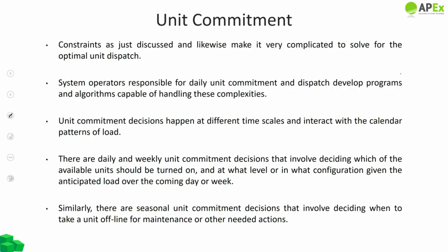When system load increases from 275 to 280 MW, the dispatch from unit A declines from 275 to 220 MW due to the minimum stable level constraint on unit B. These kinds of constraints make it very complicated to solve the optimal unit dispatch and to speak clearly about system marginal costs. System operators responsible for daily unit commitment and dispatch develop programs and algorithms capable of handling these complexities, and generators responsible for bidding and optimizing their individual plant operations are also aware of them.